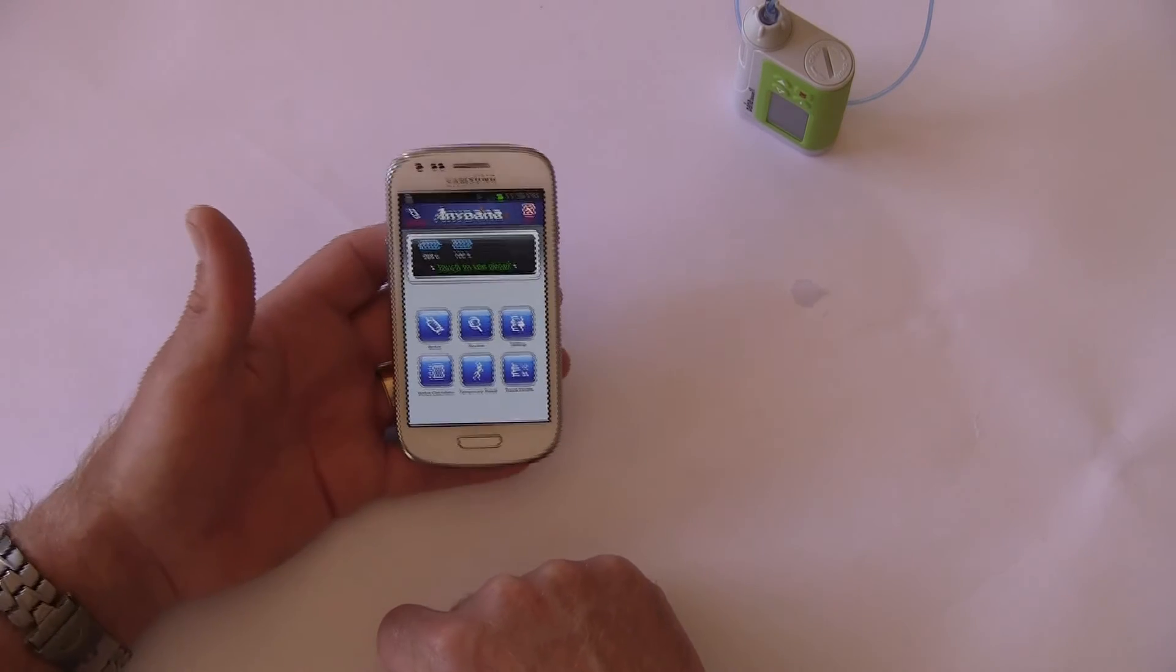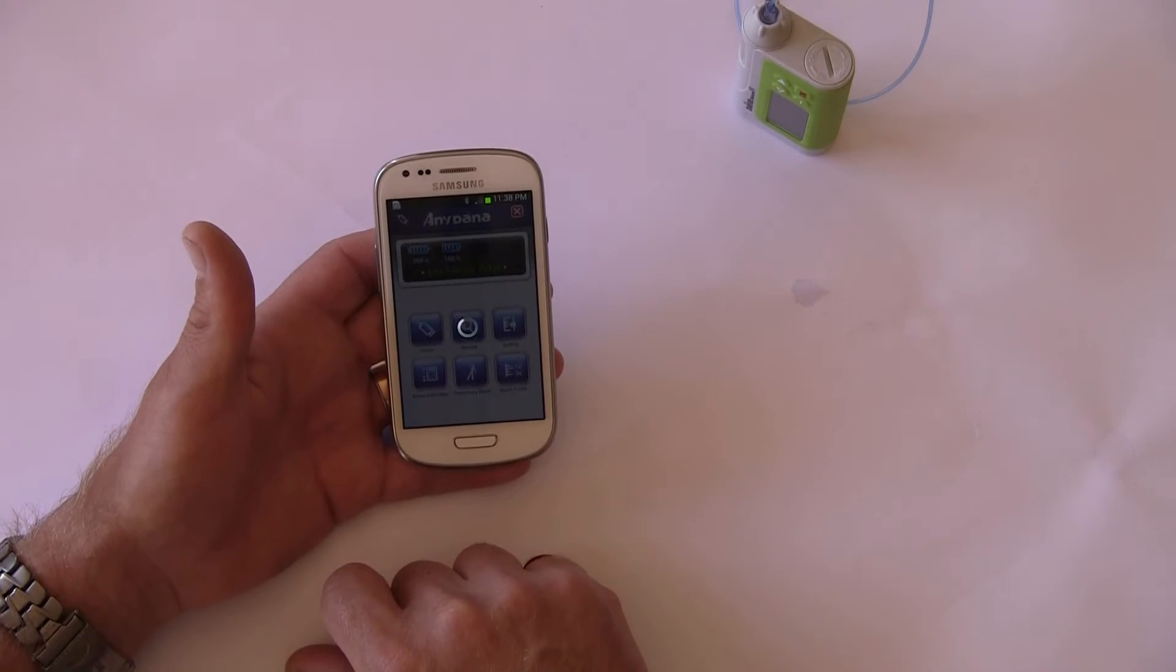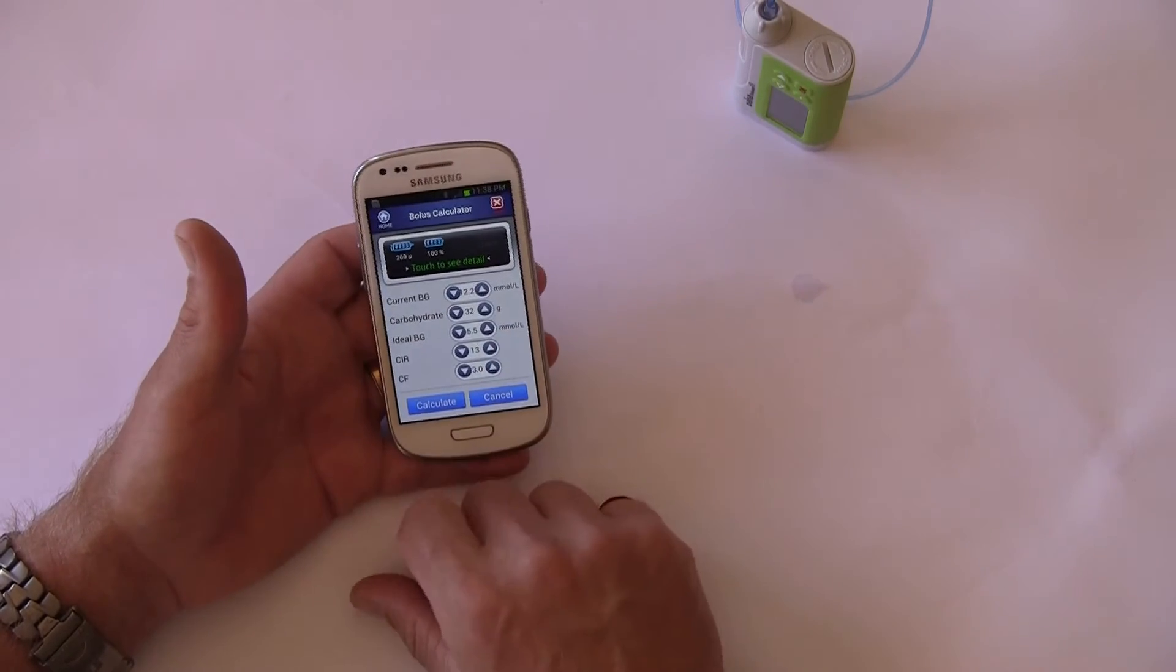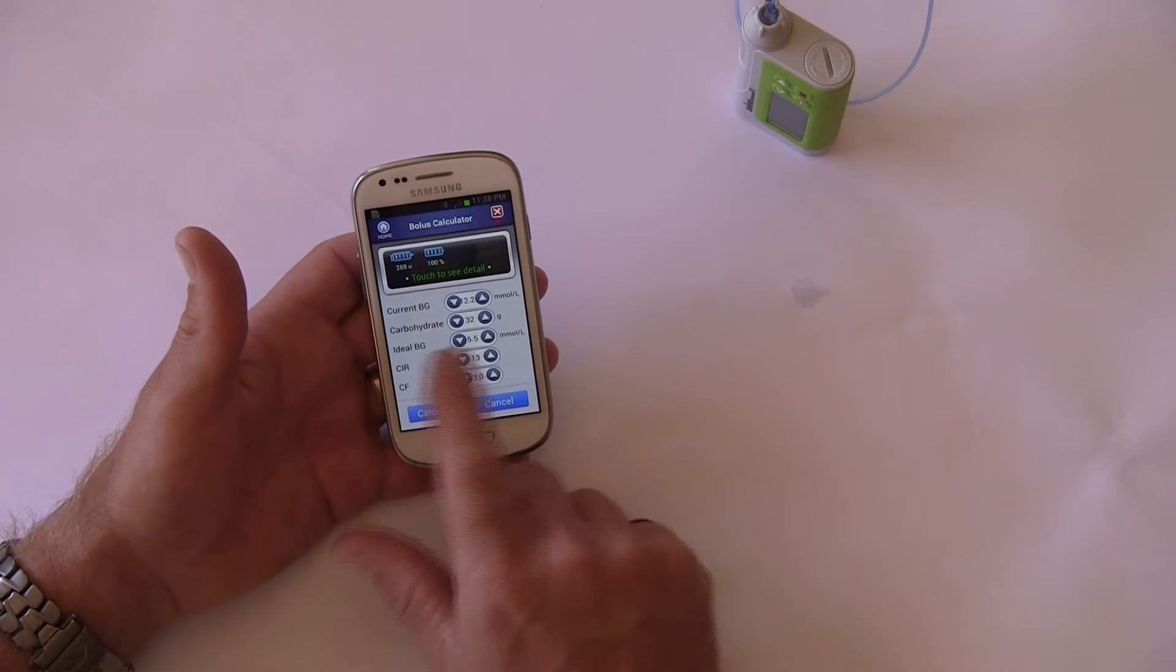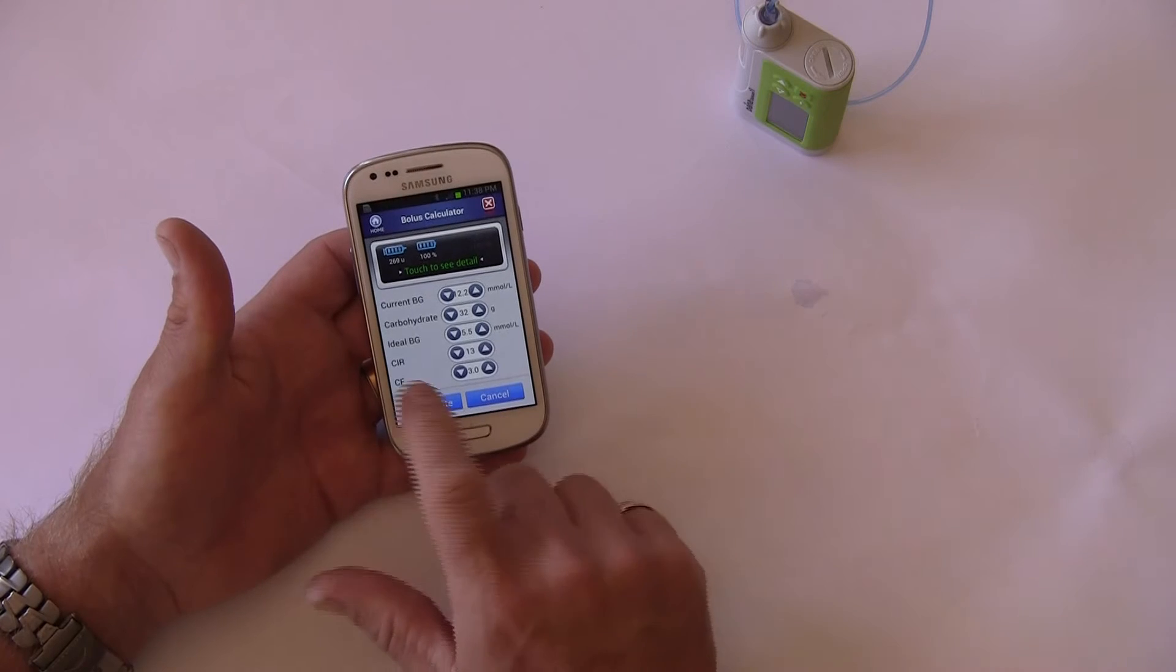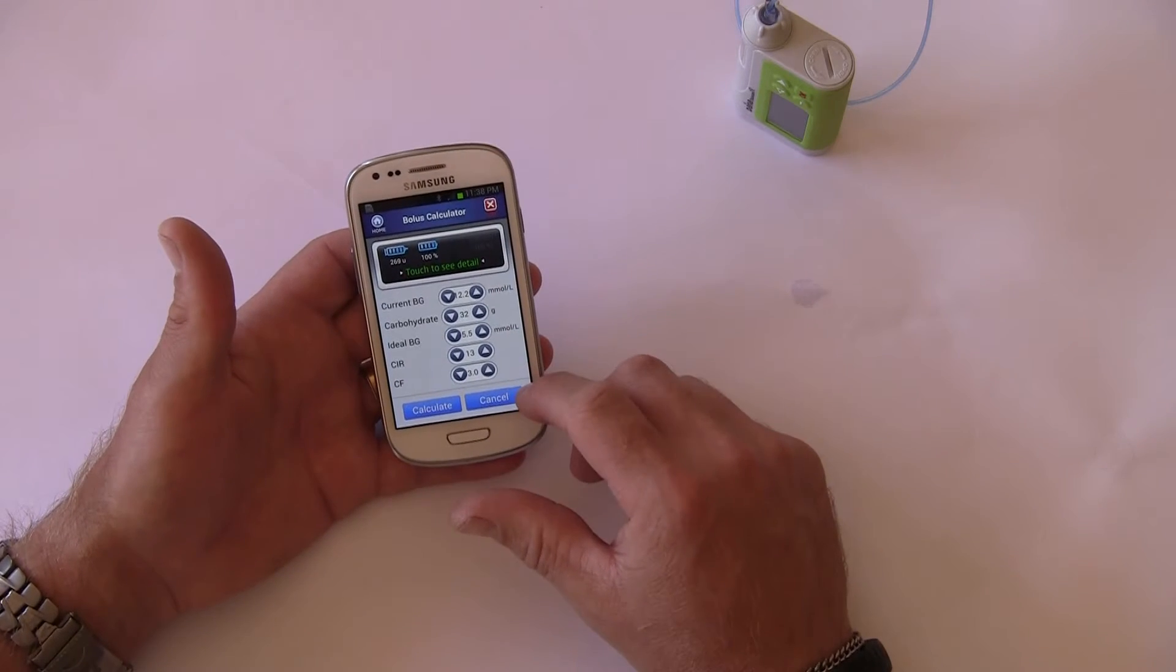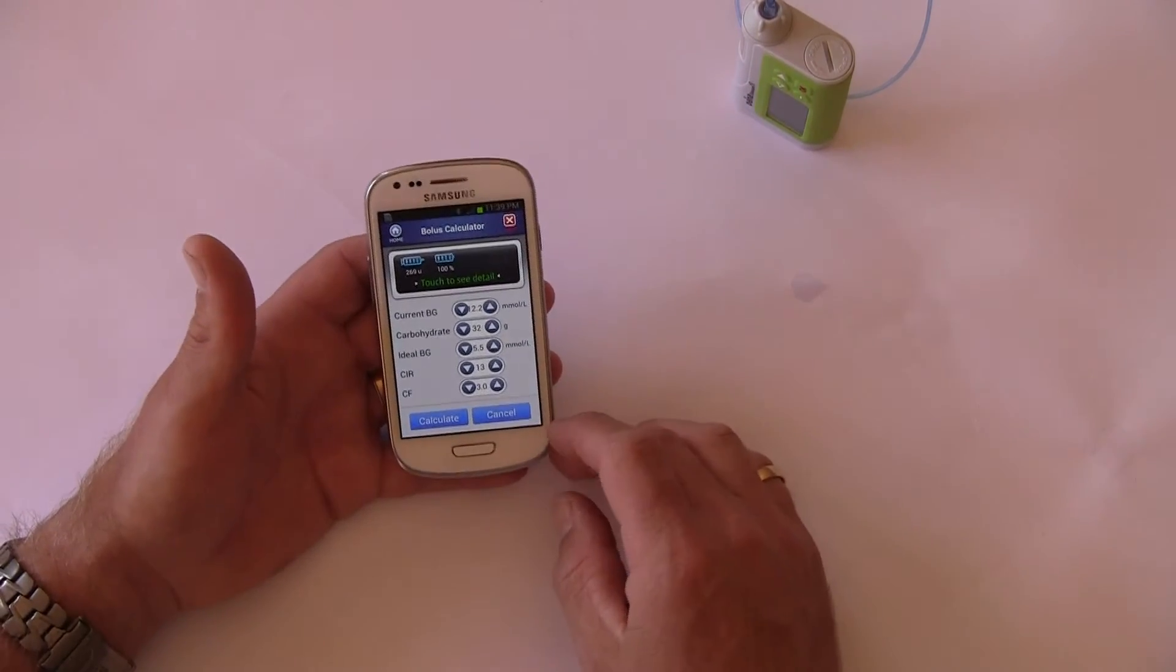Now we're out at a cafe with some colleagues or friends. We can go down to the bolus calculator in the bottom corner. It opens up a menu bar asking what is our current BG, how much carbohydrate we're having, our ideal target BG, our carb-to-insulin ratio, and our correction factor. Most of this information has been taken from the pump.